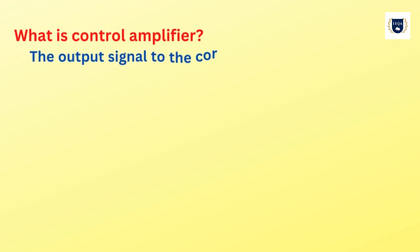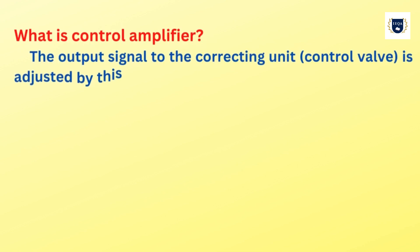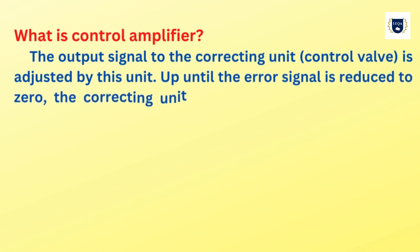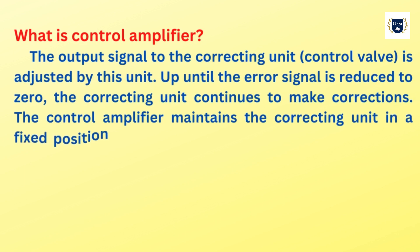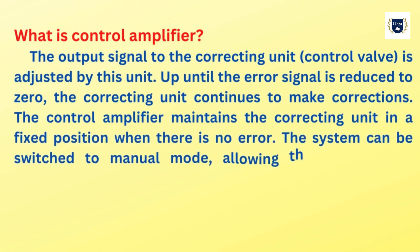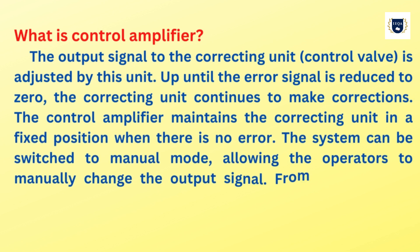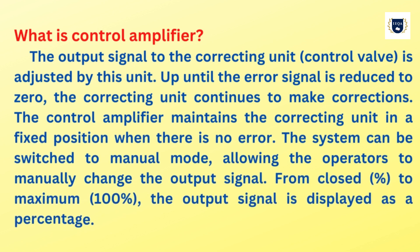What is the control amplifier? The output signal to the correcting unit is adjusted by this unit. Up until the error signal is reduced to zero, the correcting unit continues to make corrections. The control amplifier maintains the correcting unit in a fixed position when there is no error. The system can be switched to manual mode, allowing operators to manually change the output signal. From closed, 0%, to maximum, 100%, the output signal is displayed as a percentage.